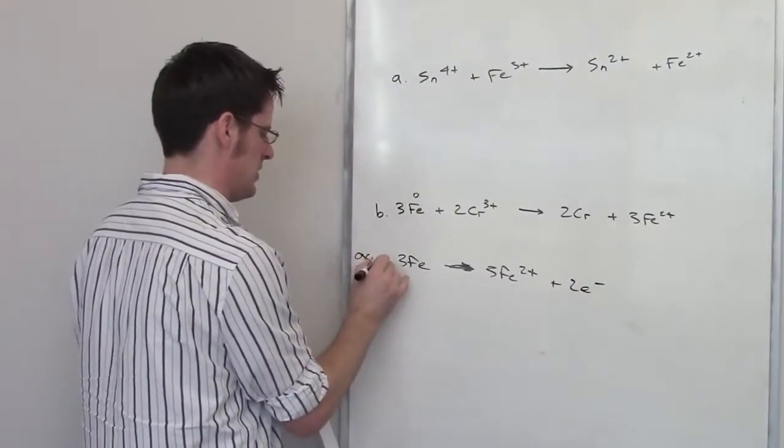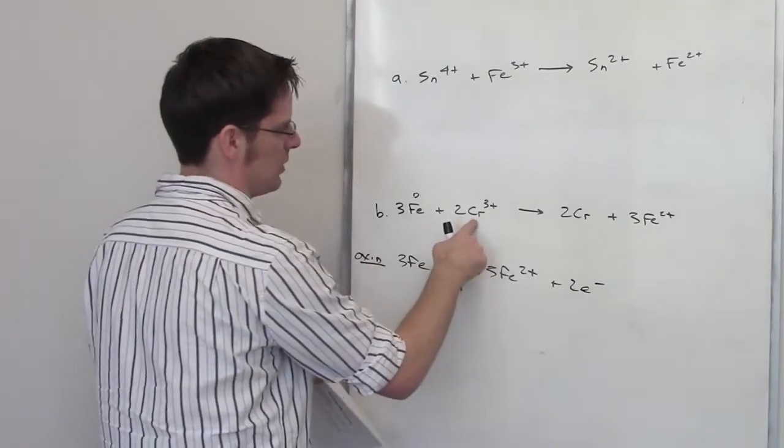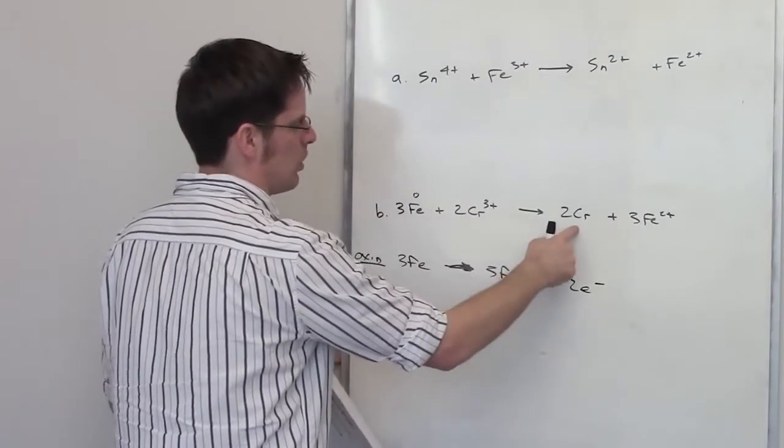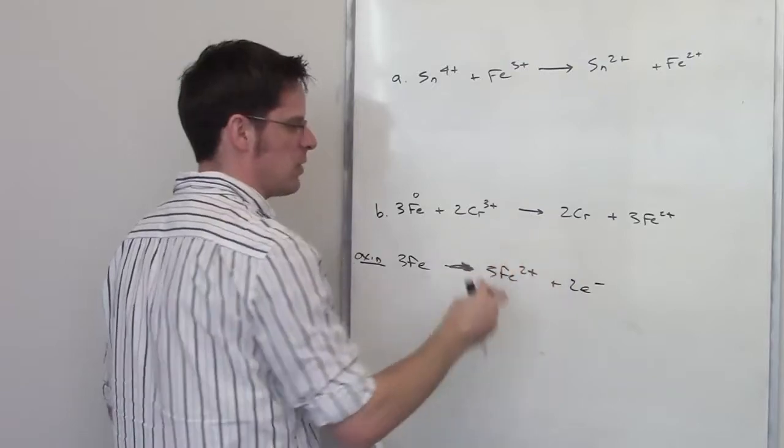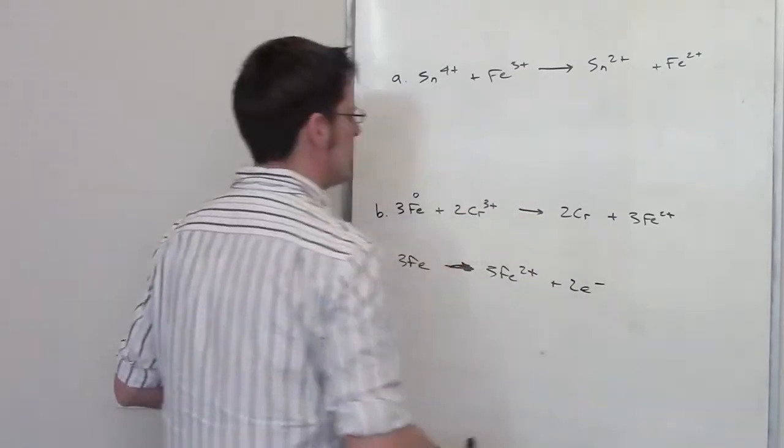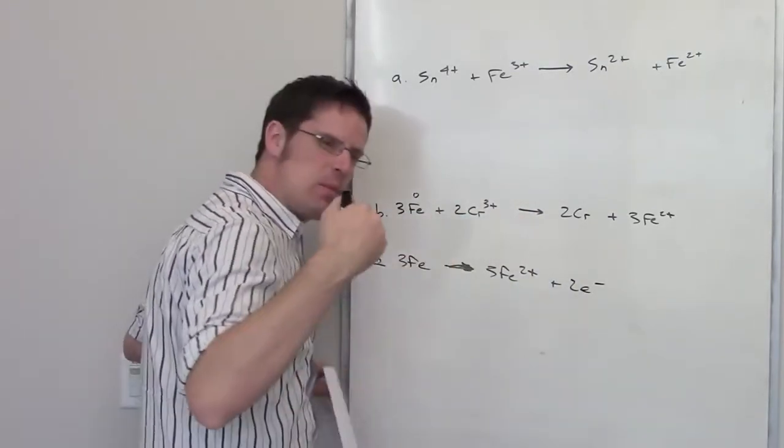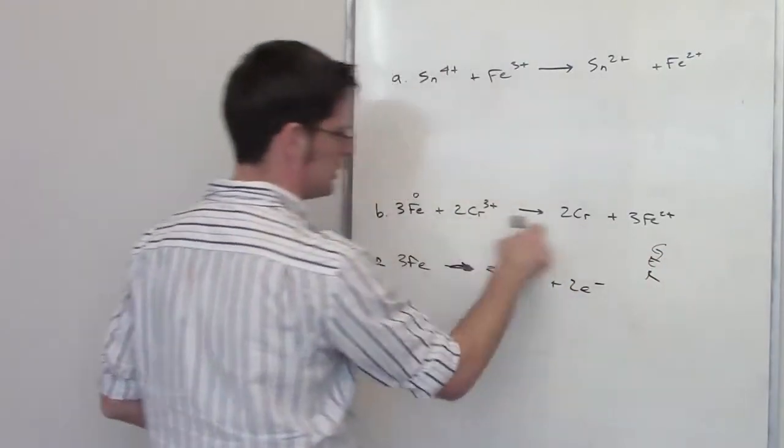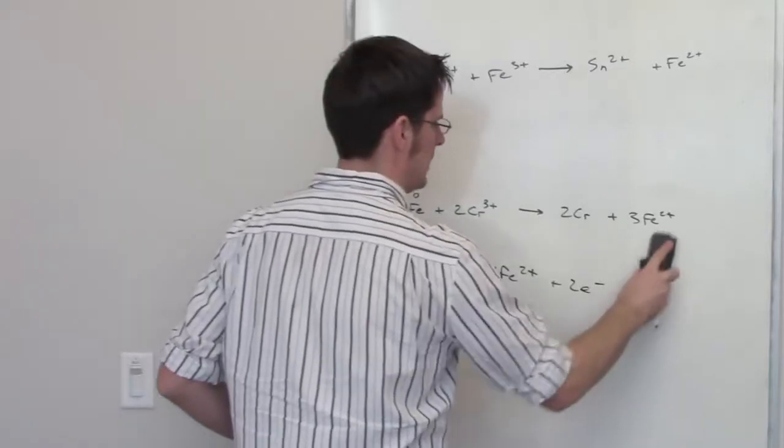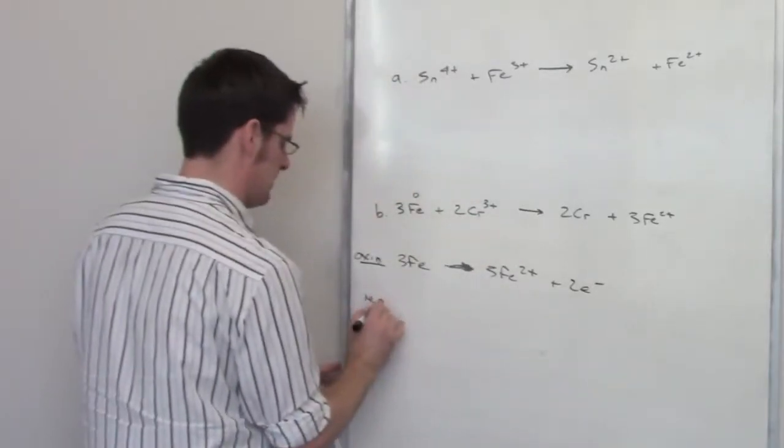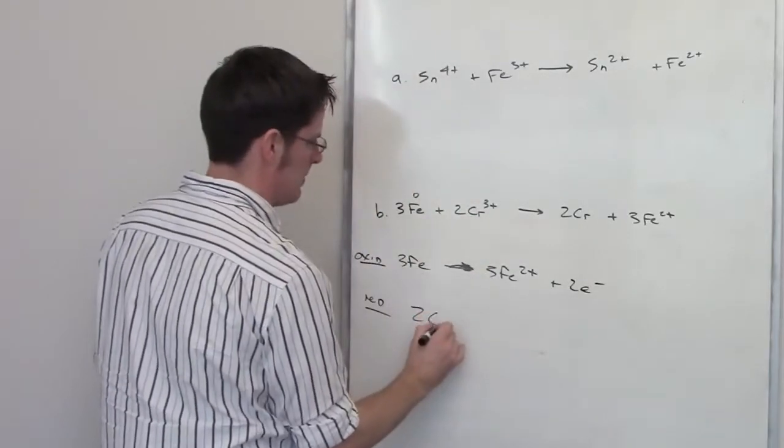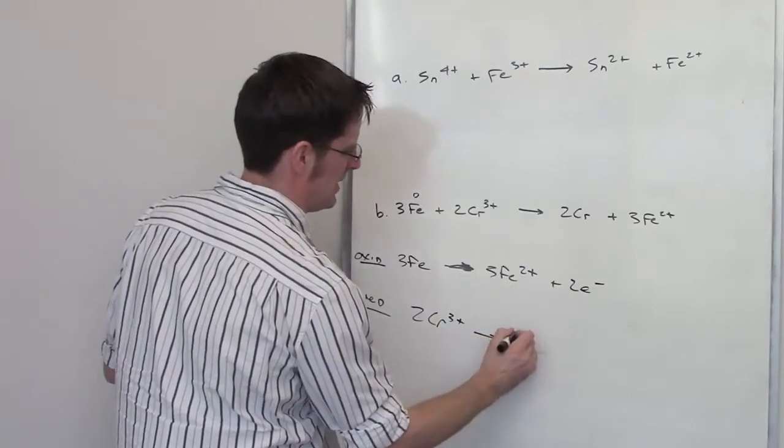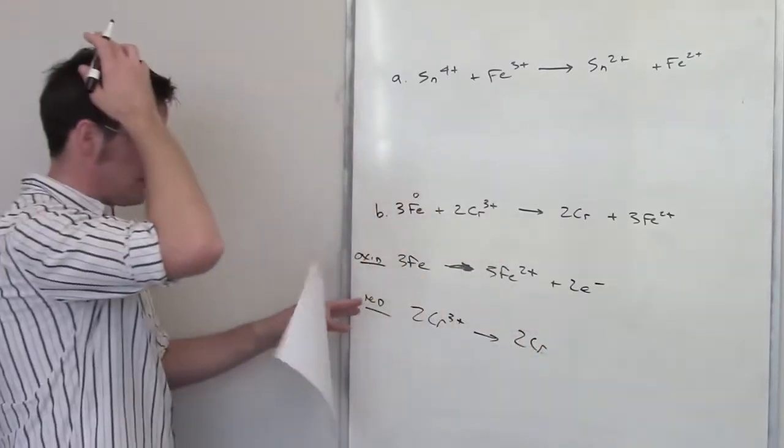So this is the oxidation step. Now the reduction step, I've got chromium three plus, going to chromium zero, it's becoming more negative, going from a positive to zero, which means that it's gaining electrons. Becoming more negative, you gain electrons. Gaining electrons is reduction. So this is the reduction step, chromium gaining electrons. Chromium is going then from three plus to chromium zero. So this is my oxidation, this is my reduction.